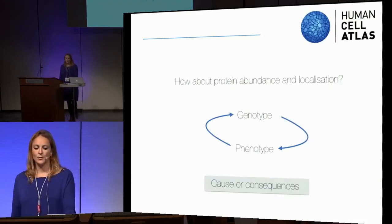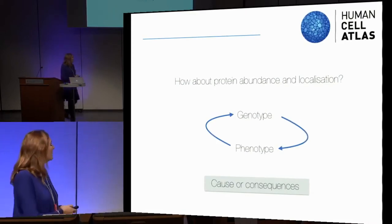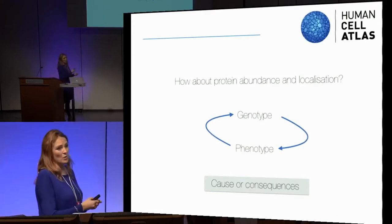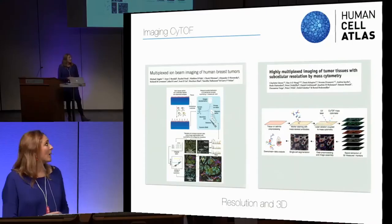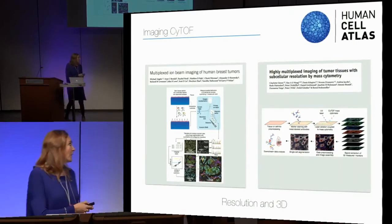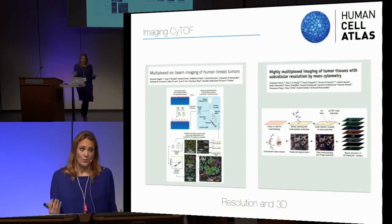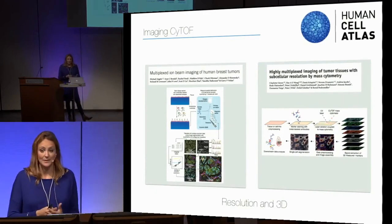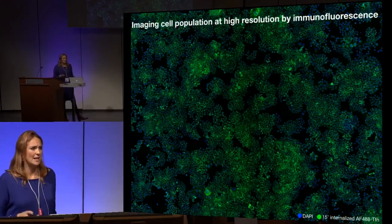What about protein abundance and localization? This is very important to get closer to the phenotype and to really define what are cause and consequences. I won't go through this slide in detail because Gary Nolan this morning showed his work and how impressive it is — we can now look at 40 to 50 proteins simultaneously. However, 3D resolution is still a bit limiting, and creating all these labeled antibodies is not trivial for every lab.